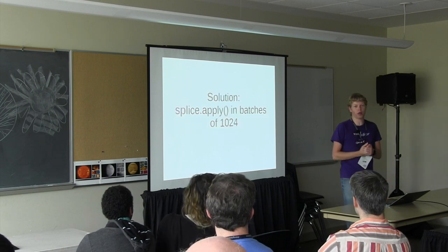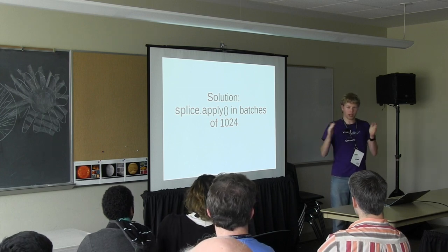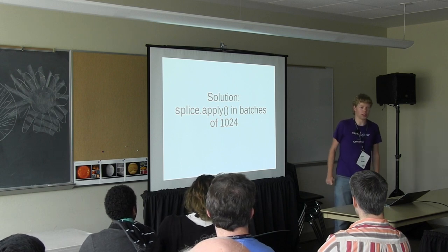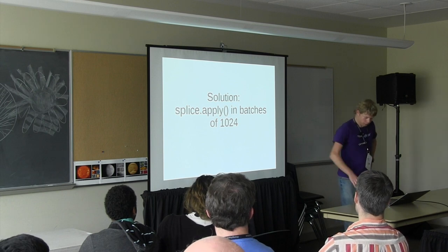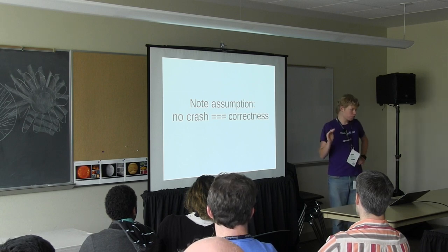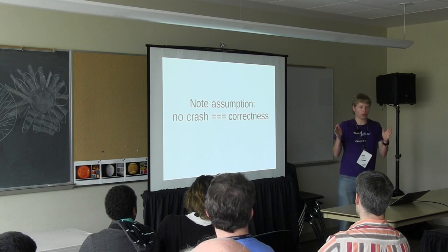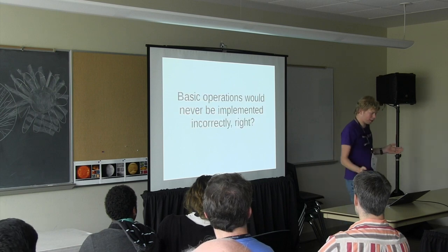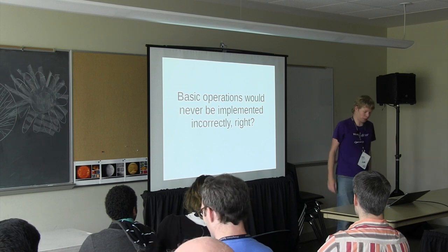The solution was to use the splice-apply approach but cut up the array to insert in batches of 1,024 items. That seemed fairly safe given the lowest limit seen was 64,000. However, we assumed that if the call to splice didn't crash, that meant it was correct — that as long as splice accepted all the arguments, they would all get inserted and everything would be fine, because splice is a pretty basic operation and browsers would never screw it up, right?